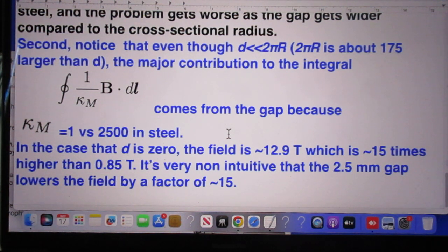Yes, if D were 0, you would think that makes hardly any difference. It makes a huge difference. The field then, everywhere in the steel would be about 13 Tesla. 15 times higher than 0.85 Tesla.